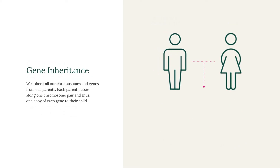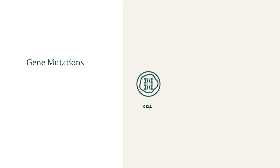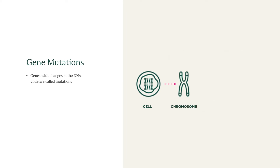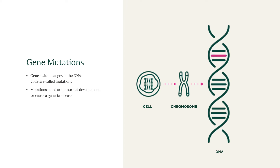Sometimes genes have alterations or changes in the DNA code called a mutation. When a gene mutation alters a protein that plays a critical role in the body, it can disrupt normal development or cause a genetic disease.